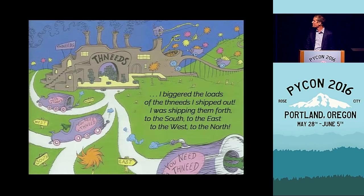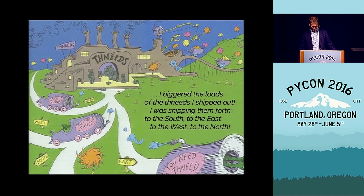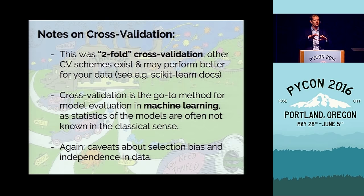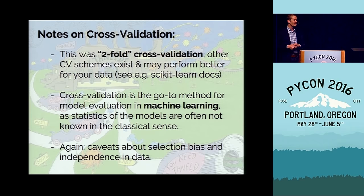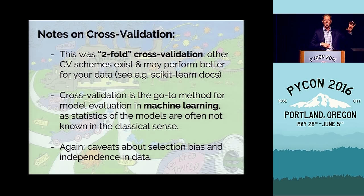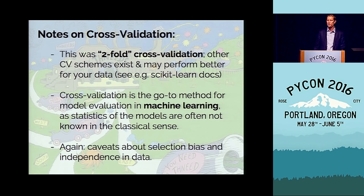Doing that, we fit the second-order model — the one that minimizes the cross-validated error — and we can be sure we have a solid model for our data. This was two-fold cross-validation, splitting the dataset into two folds. There's also K-fold cross-validation, where you split into K sets, fit on K-1 and test with one, then shuffle and repeat. The scikit-learn package documentation has a good description of how to use these different cross-validation routines and why you might use one over another.